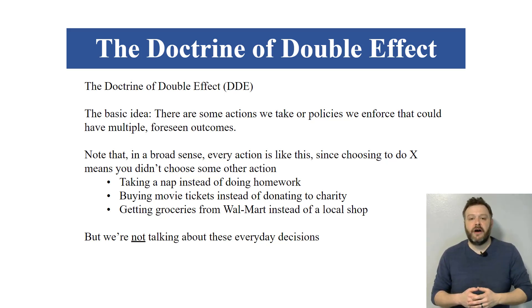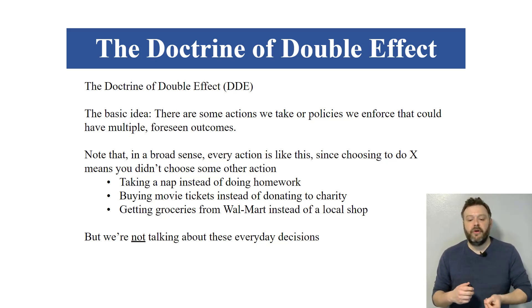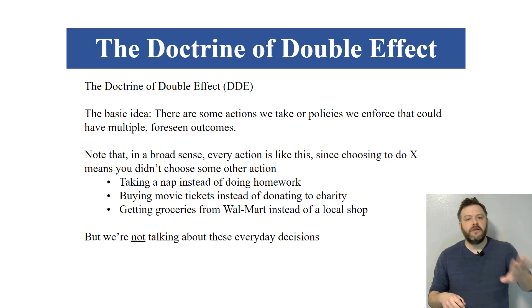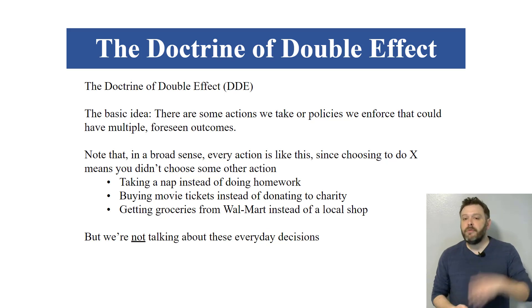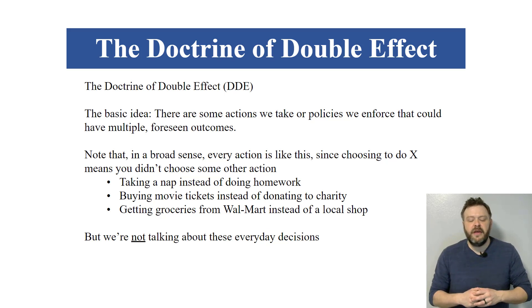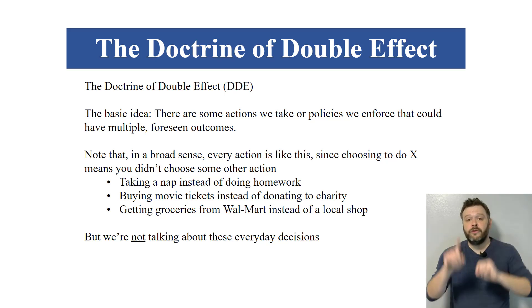The basic idea behind the doctrine is that it is going to tell us what is morally permissible in cases that involve two outcomes — one that you are foreseeing and intending to happen that is good, and then one that you know is going to happen, you wish it wouldn't, but it definitely will, and it's bad. Good and bad here we're just going to cash out as valuable and disvaluable respectively. So what we're talking about is an action that is going to have two distinct outcomes — same action, two different effects, one good, one bad.